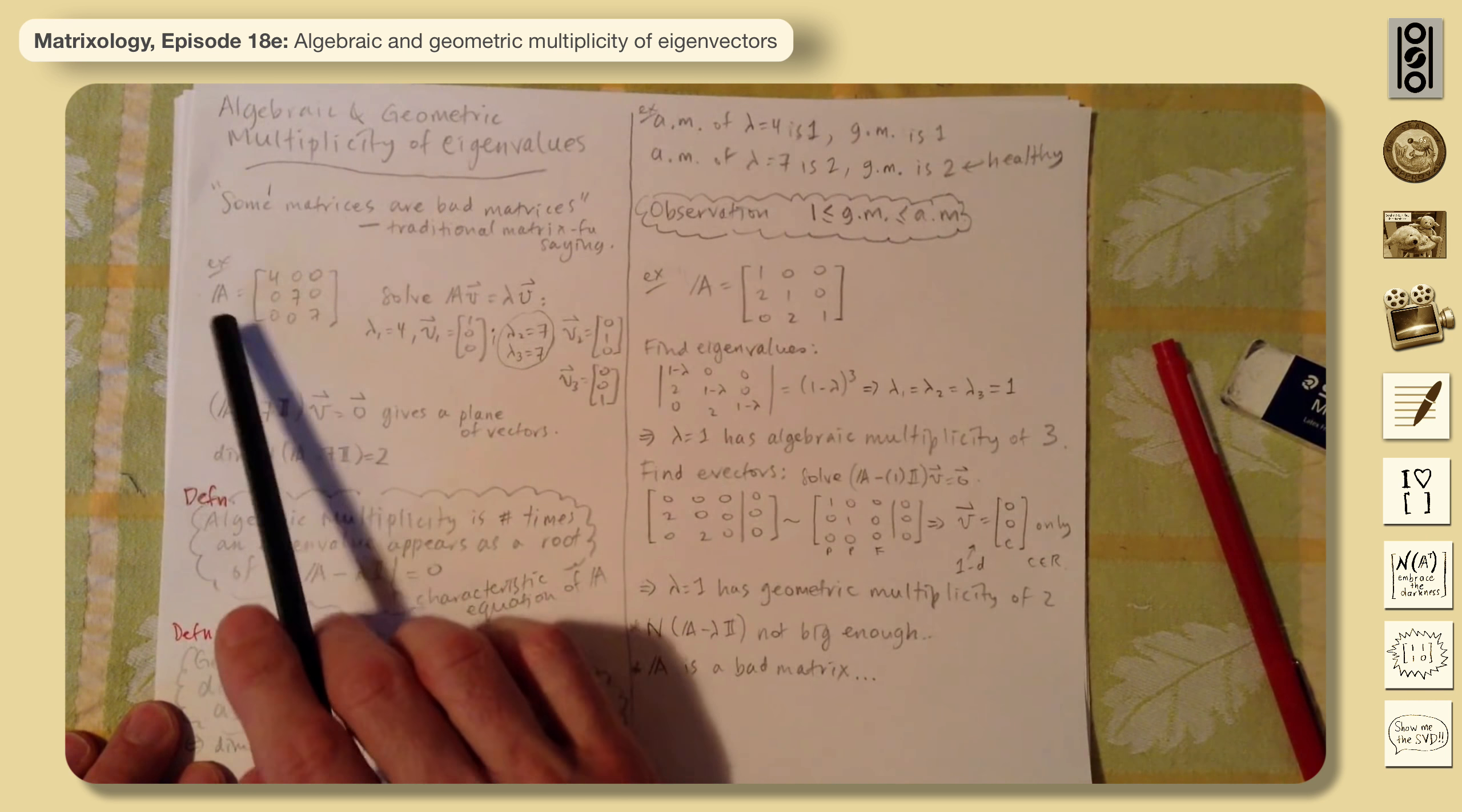But it doesn't have any other eigenvectors. There are simply none, no others that appear. The dimension of the null space associated with lambda equals one, it's not big enough.